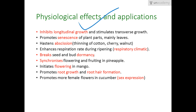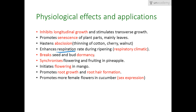Ethylene has both promoting and inhibiting functions. It hastens abscission — that is, the thinning of cotton, cherry, and walnut. Abscission means the closure, stopping, or death of plant parts. It also enhances the respiration rate during ripening, which is one of its promoting functions.